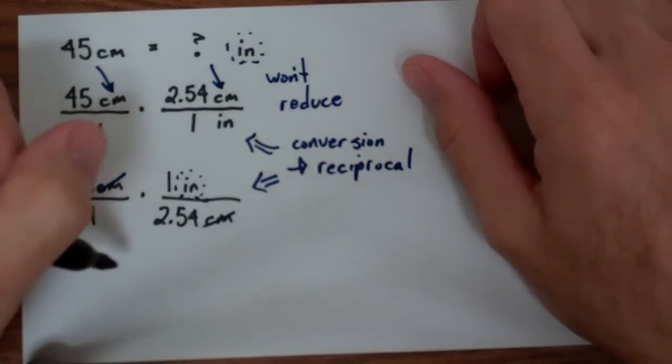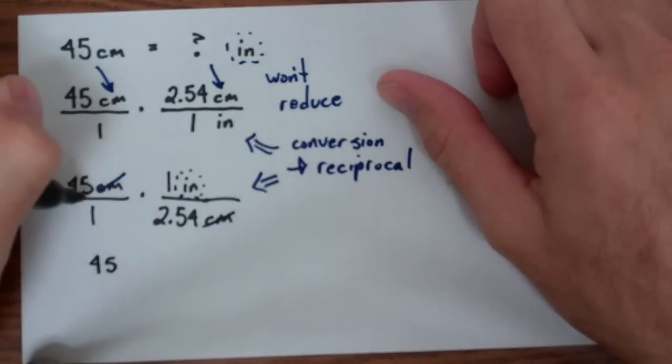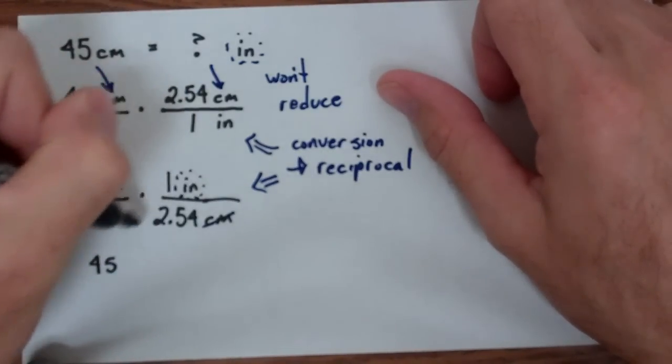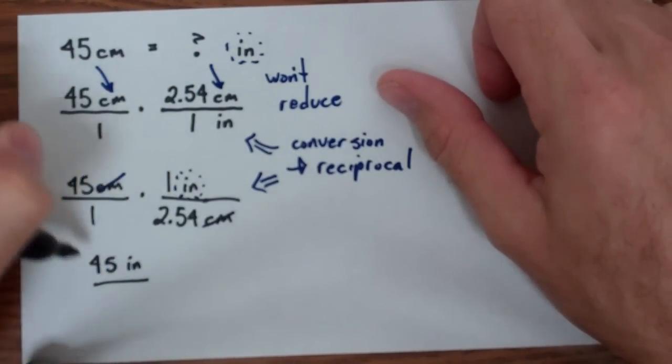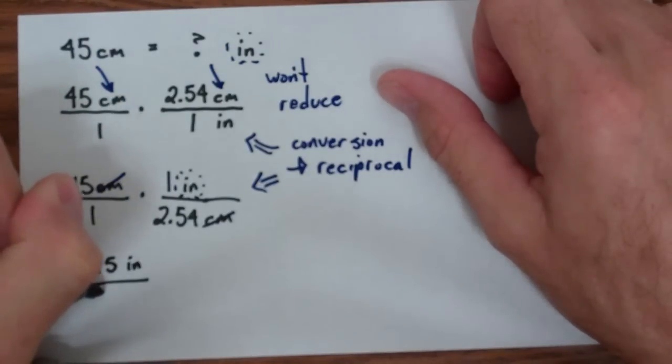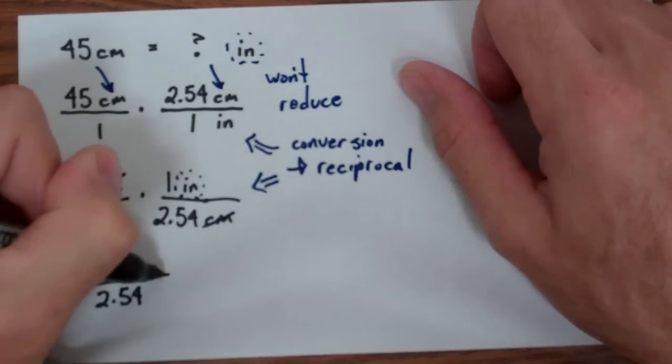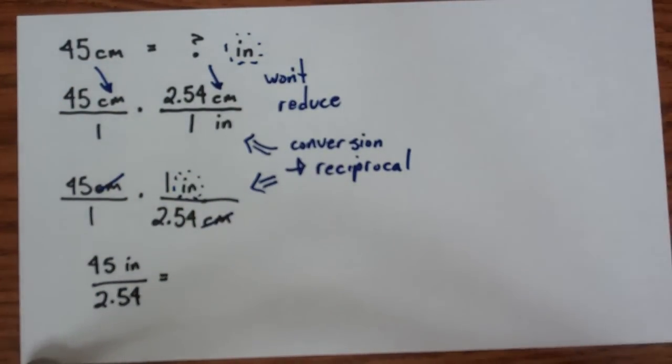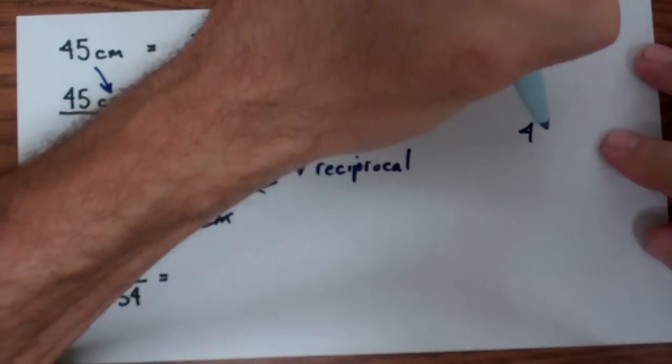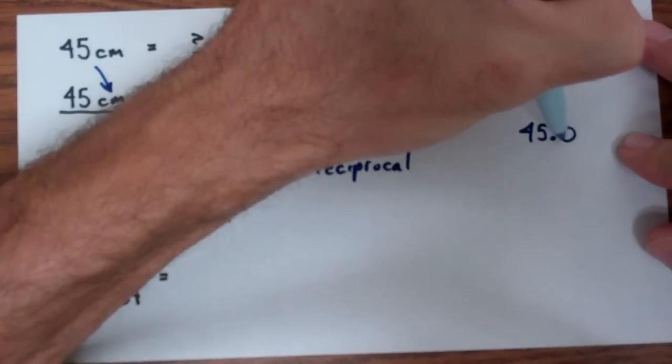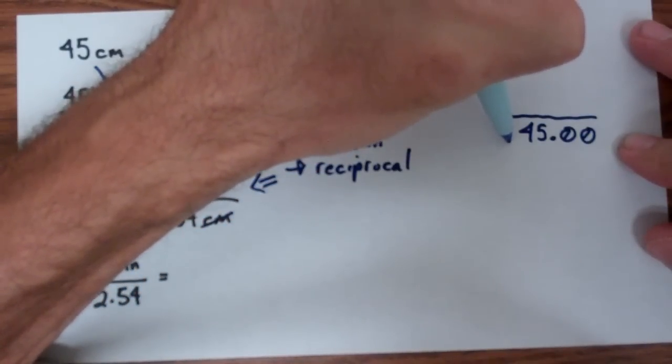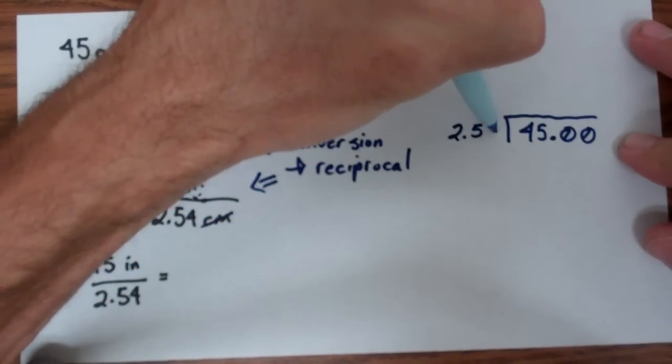So now as I multiply straight across, you're going to get 45 times 1 inch gives you 45 inches over 1 times 2.54 gives you 2.54. And then you have to do the long division on this. So I'm going to go ahead and take 45.00 and divide it by 2.54.